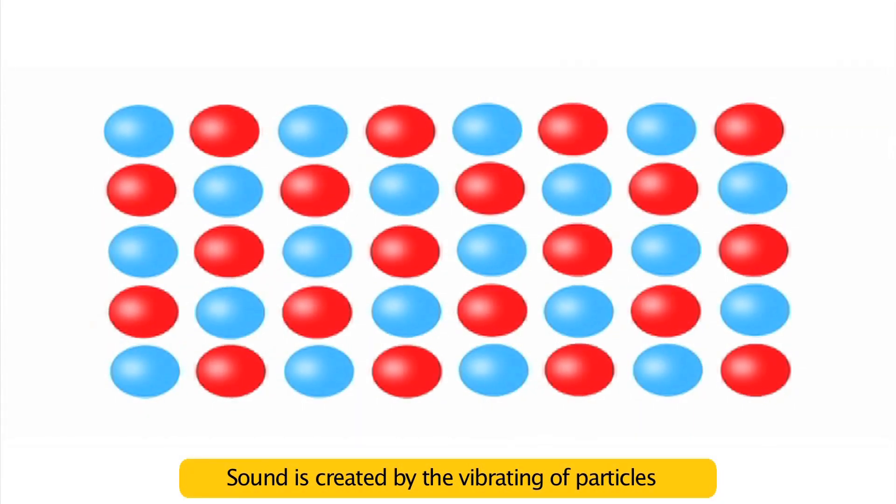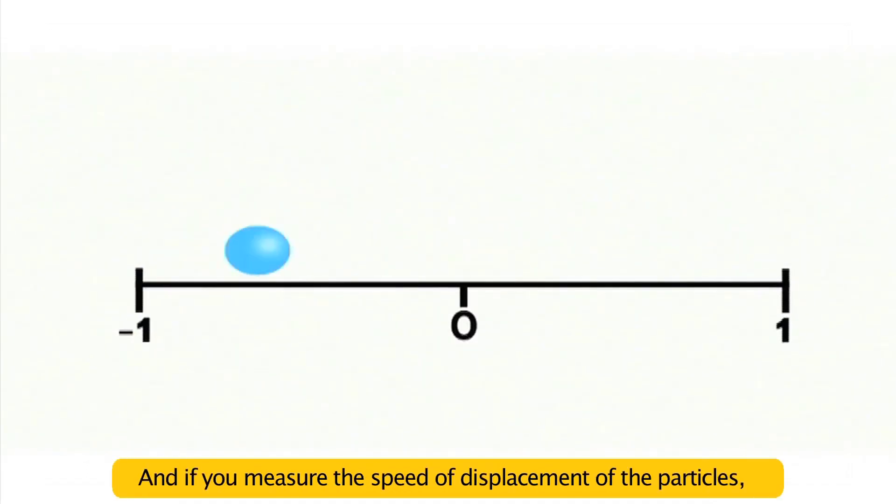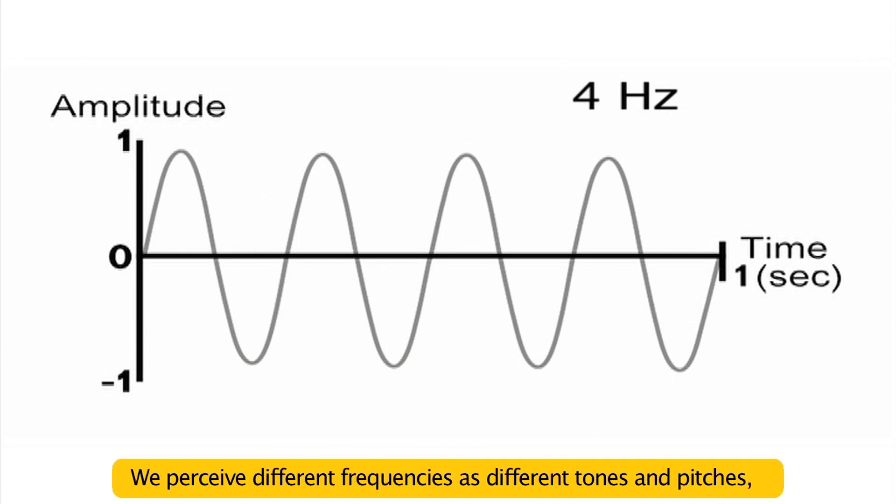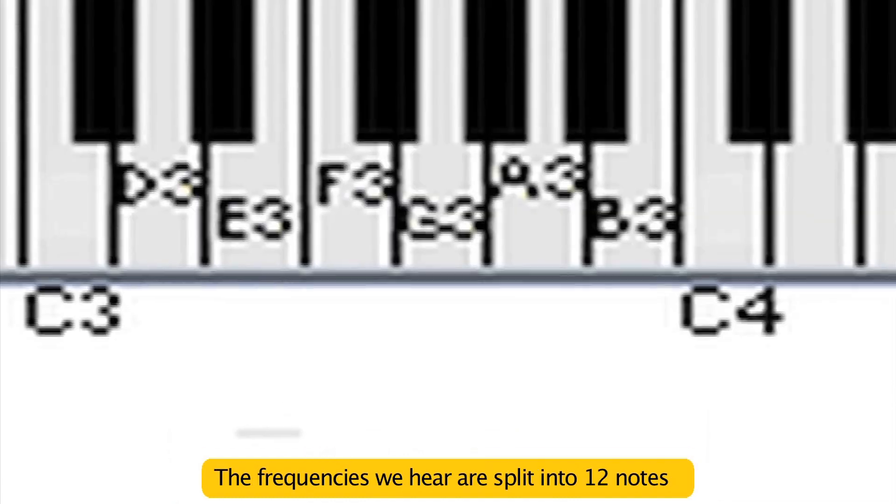Sound is created by the vibrating of particles existing as a solid, liquid, or gas. If you measure the speed of displacement of the particles, you'll be able to tell what frequency the sound has. We perceive different frequencies with different tones and pitches, up to a certain limit beyond which our hearing fails.